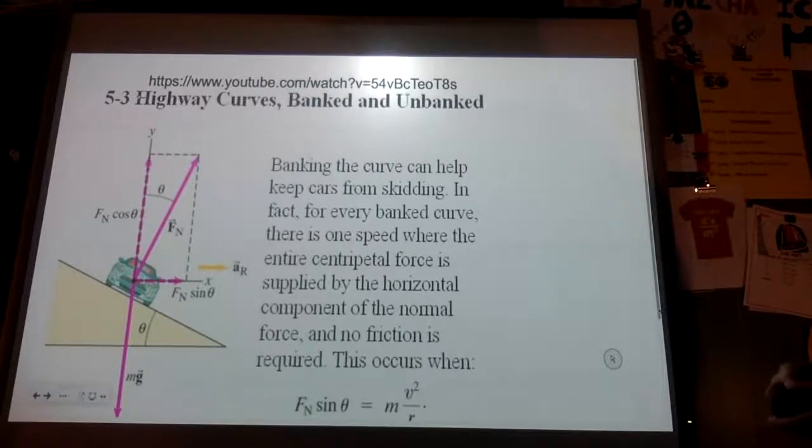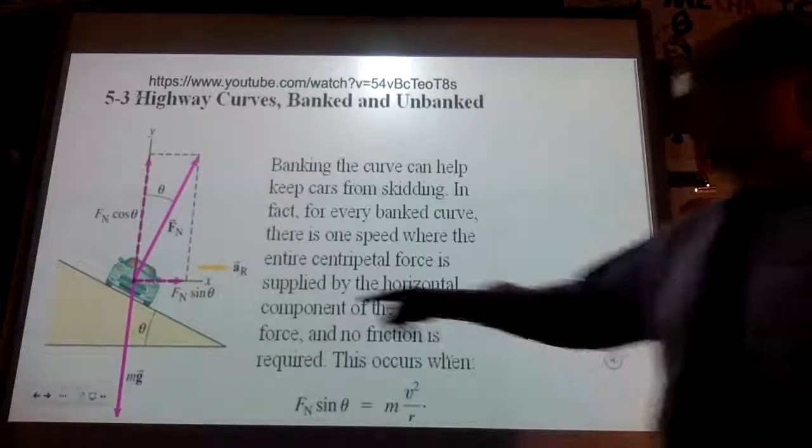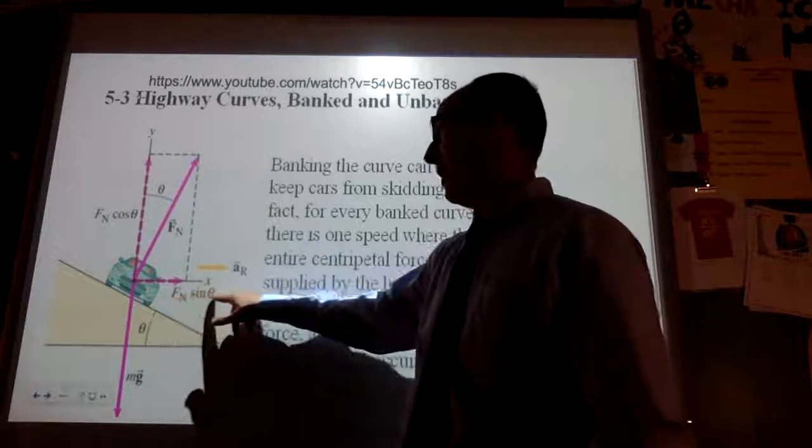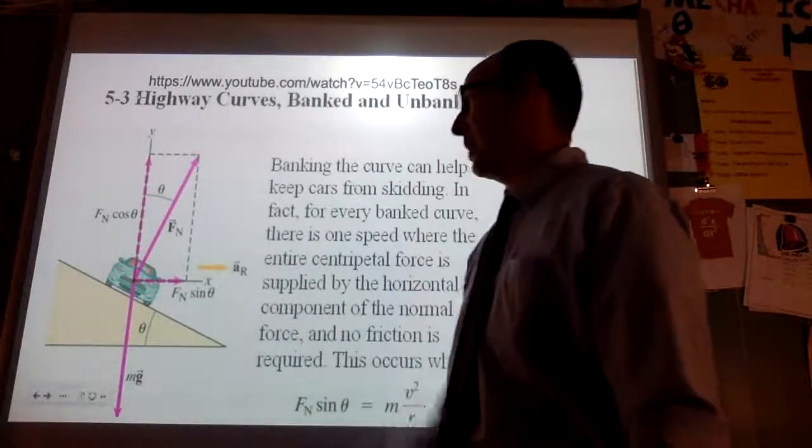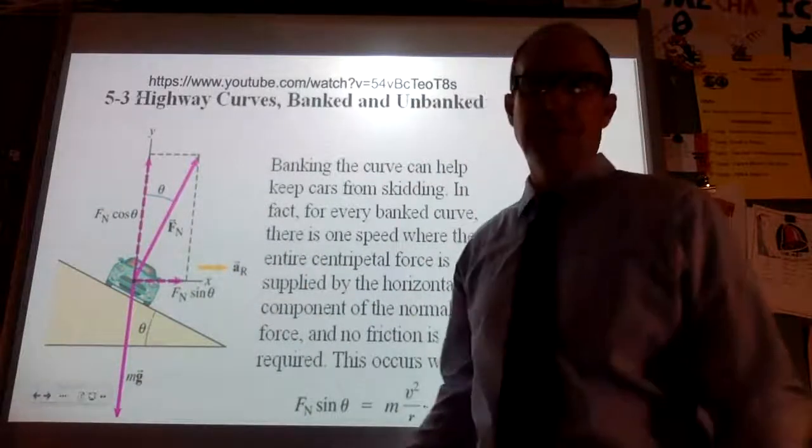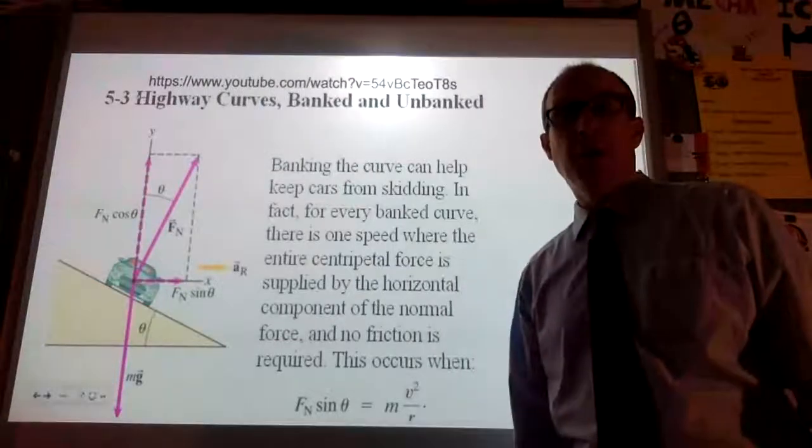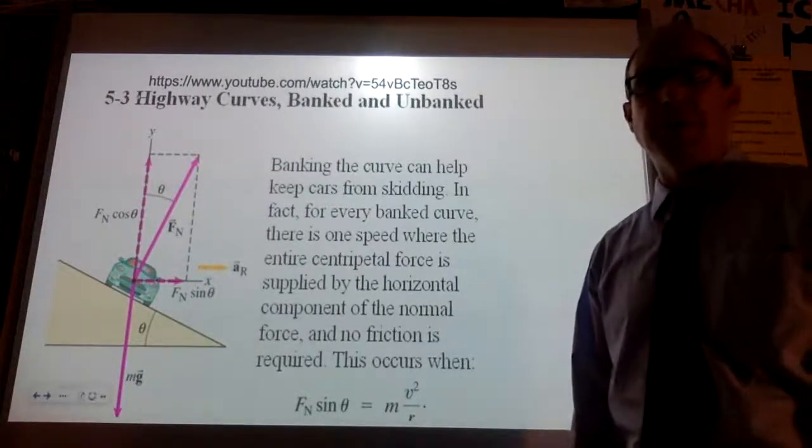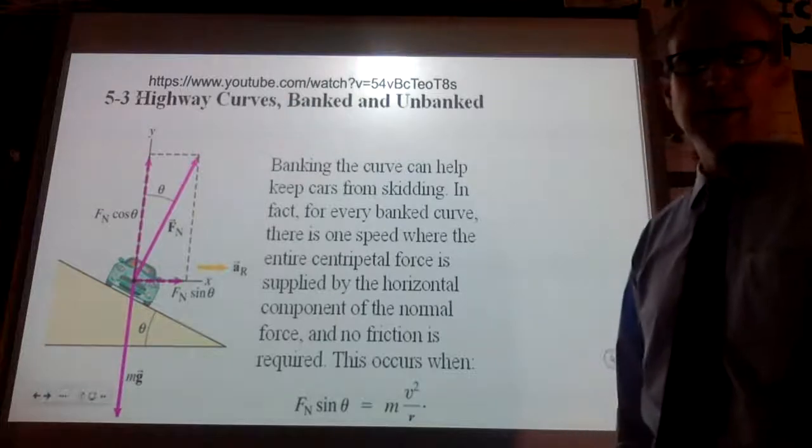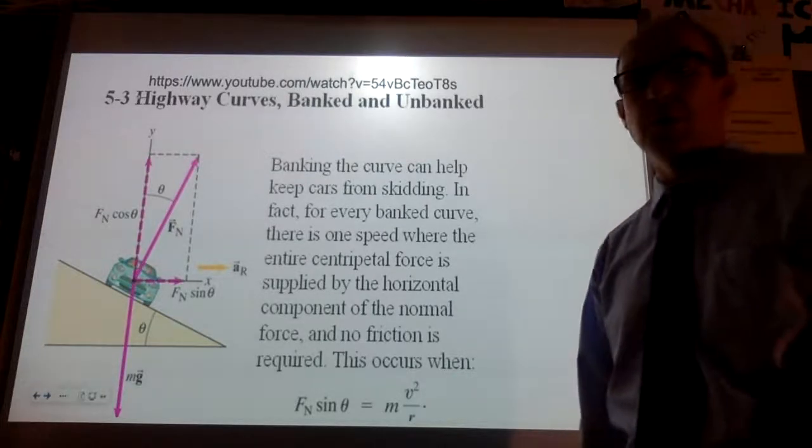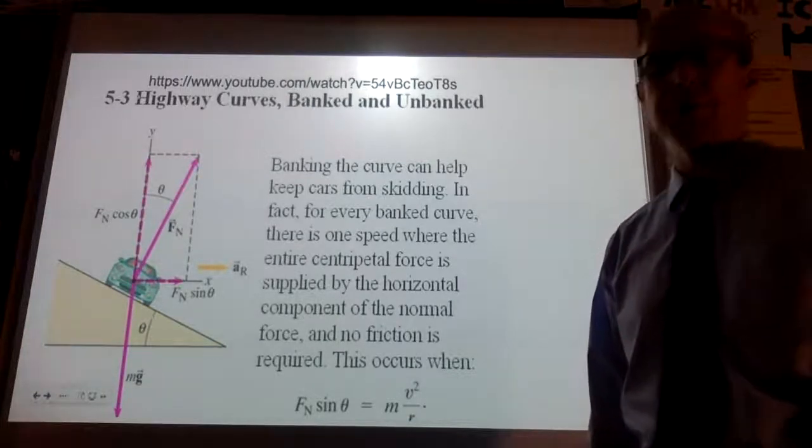And again, here's an example of a banking of a curve. So part of the normal—the normal times the sine of the angle—is actually going towards the center, and so is friction. But you could have something banked with no friction at all and it still would be able to turn with no friction at all, just with the normal force.